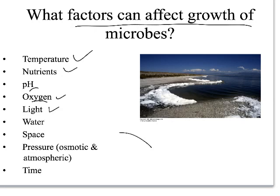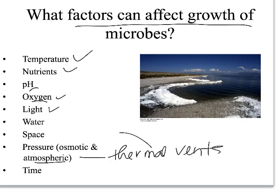Microbes have been found that can grow in thermal vents in the ocean. Pressure is also a factor — for example, if something is brought back from Mars, how does the pressure affect it? Osmotic pressure refers to how many solutes are in the water the microbes are growing in. For example, the Great Salt Lake — that white material around the edge is actually salt, not snow.